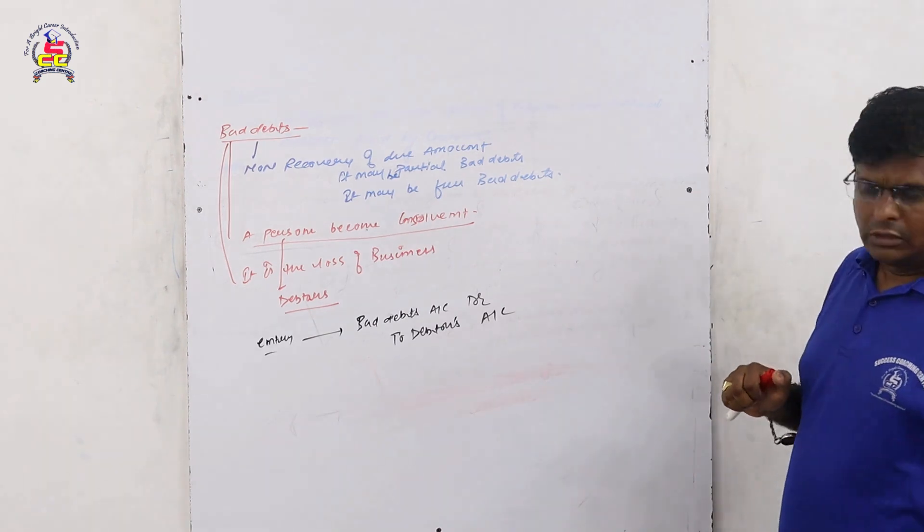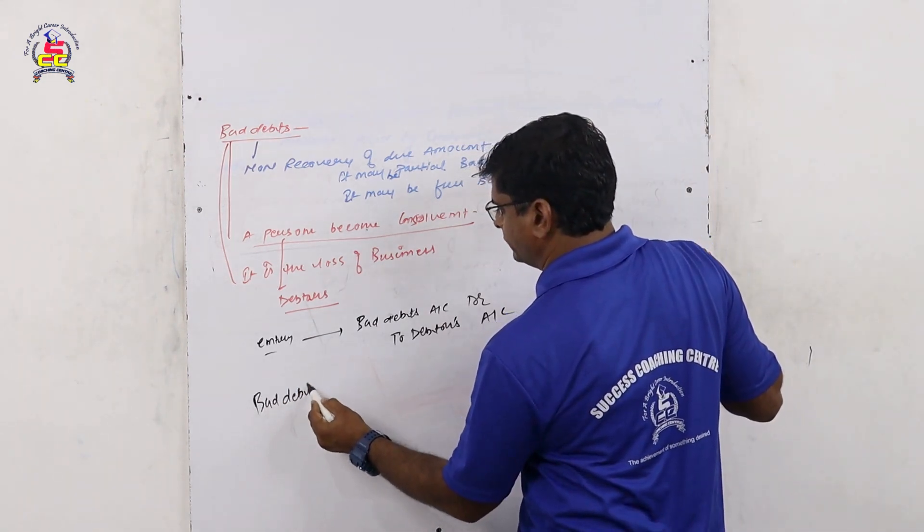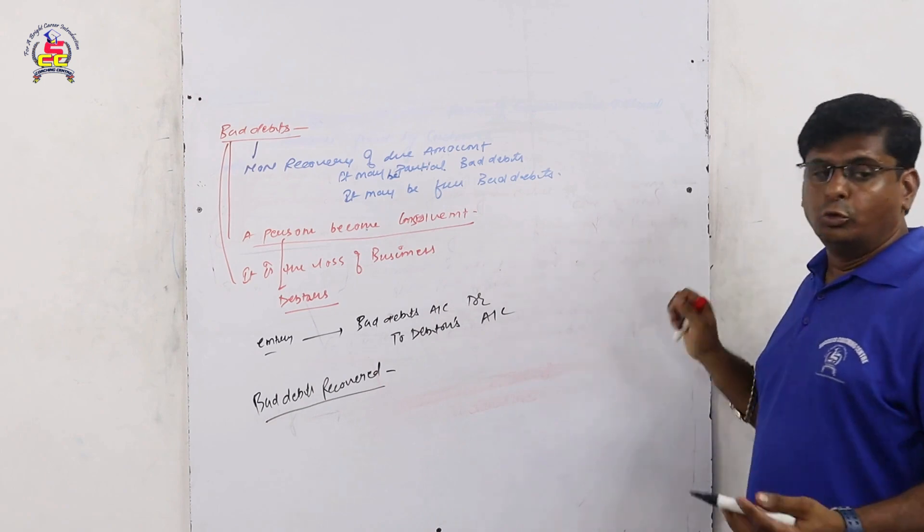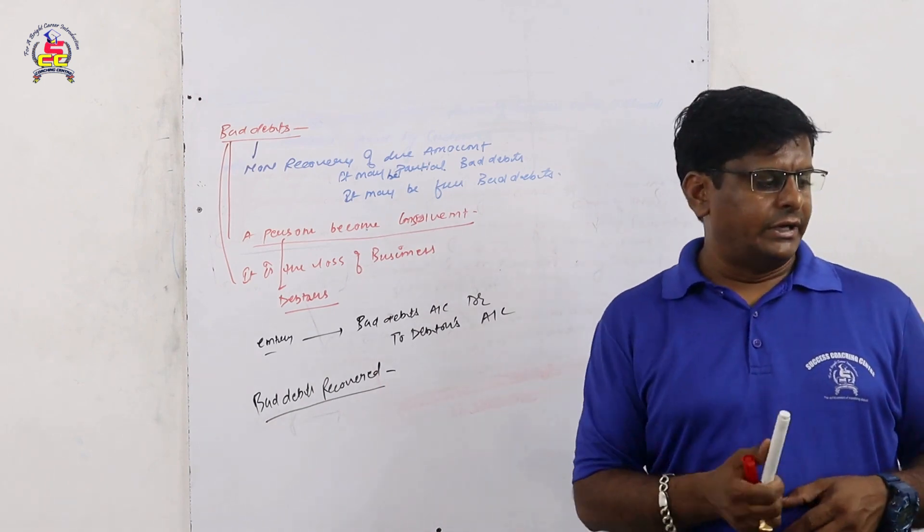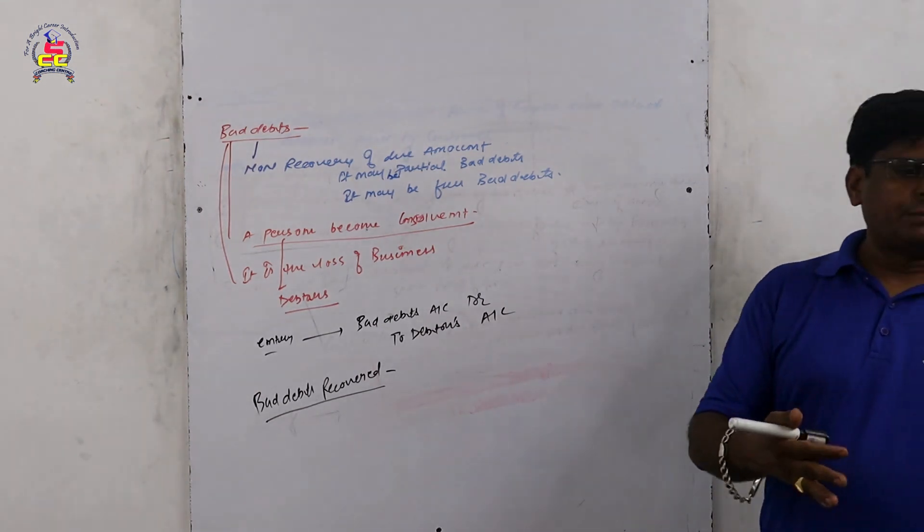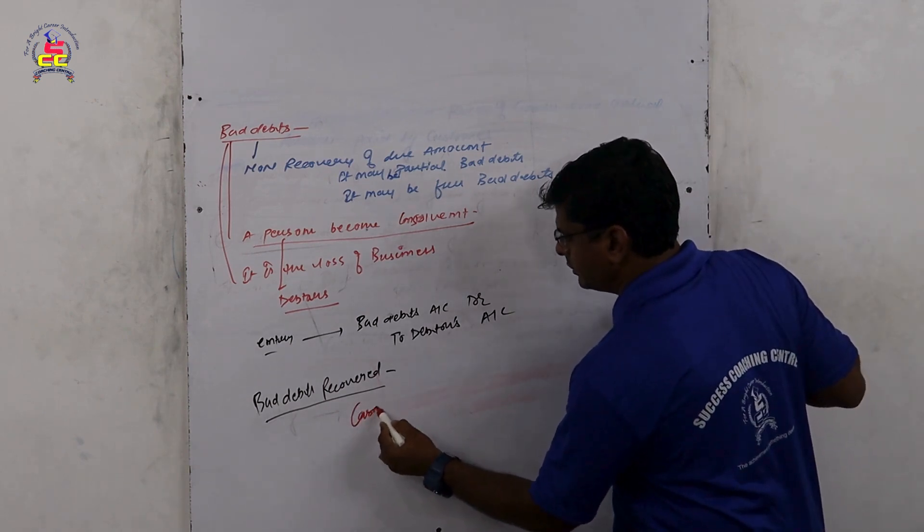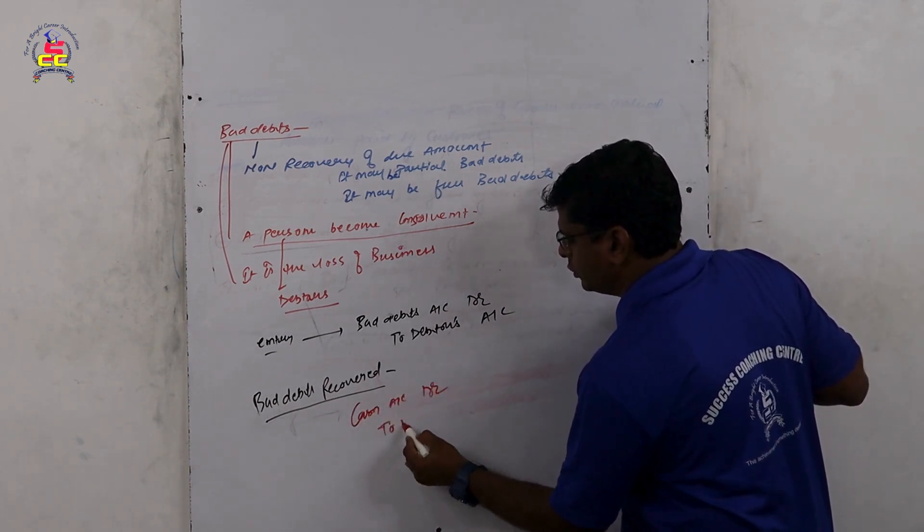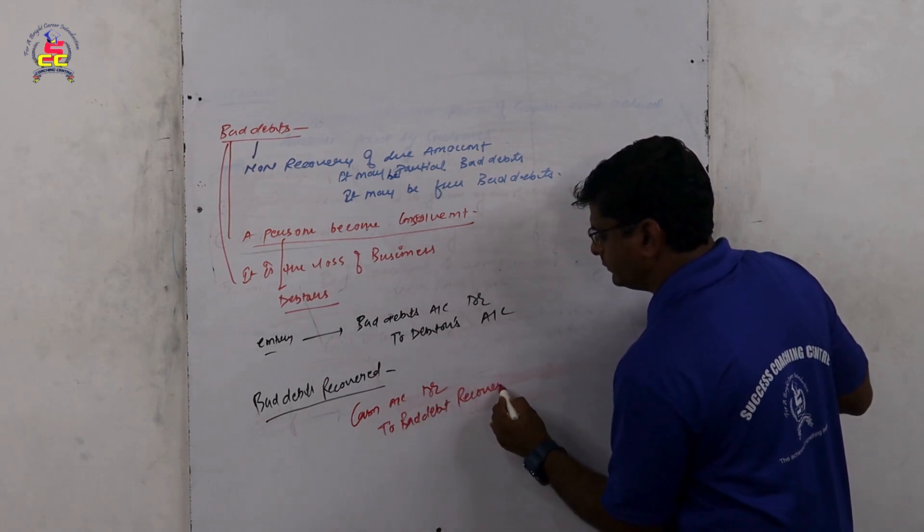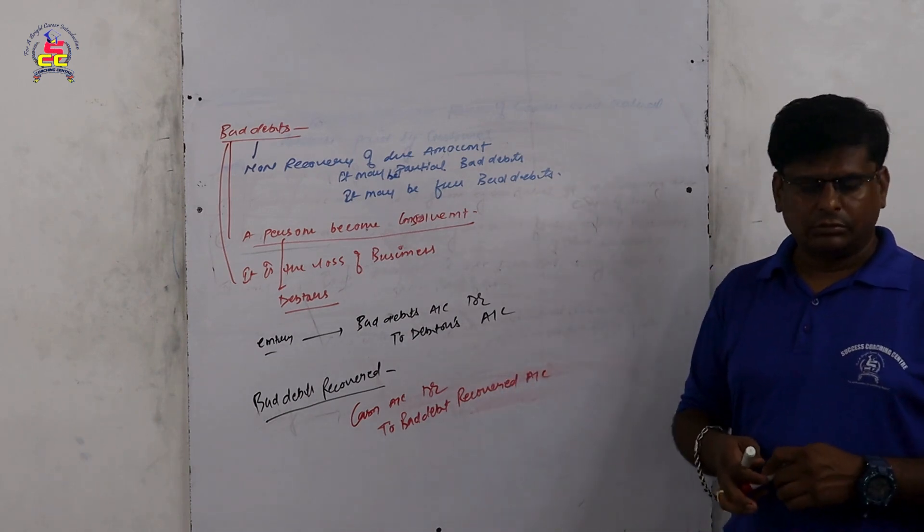Now what happens? Next happens, bad debts recover. What happens? The money is lost and we have to pay the money. The debtor says that your position is good, I'm going to give you some money. What is the money back? You have to pay the money back. So entry is cash account debit to bad debts recovered account.